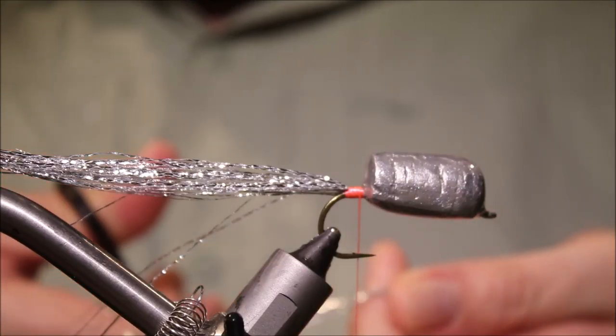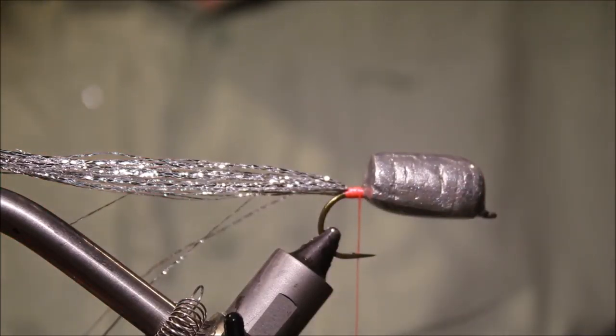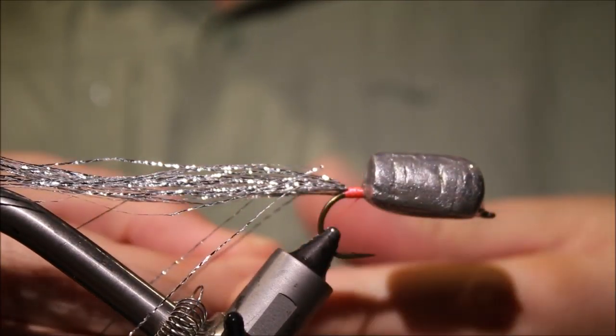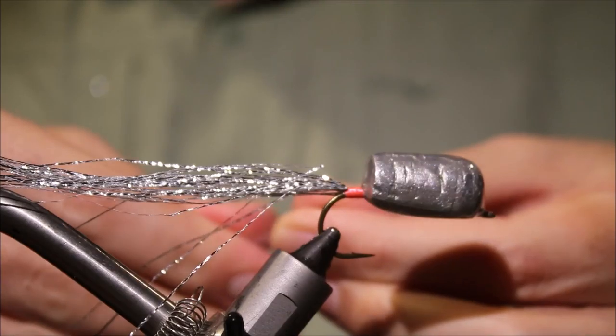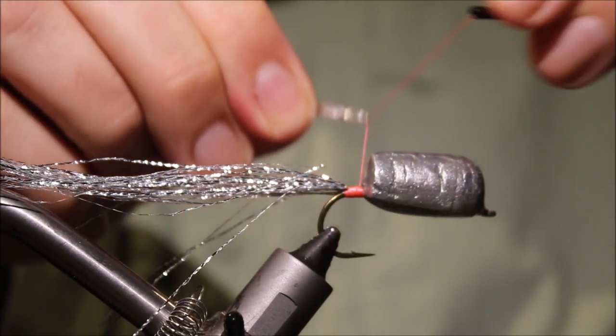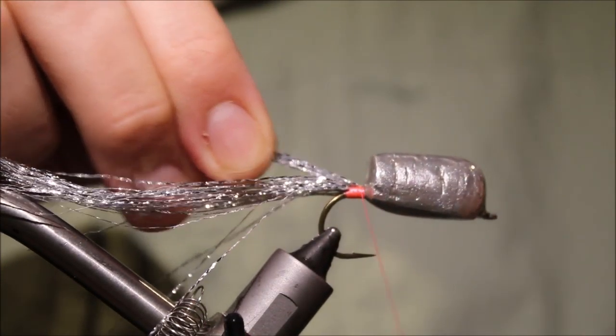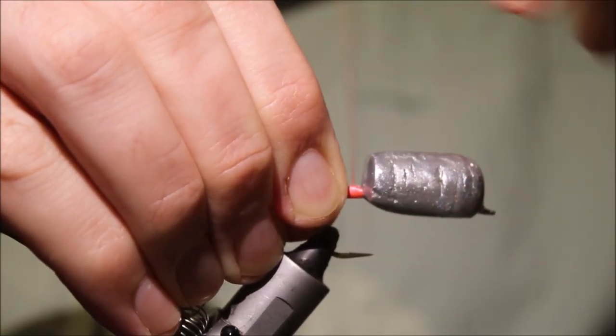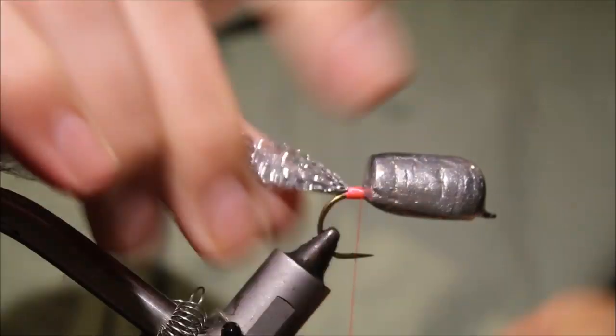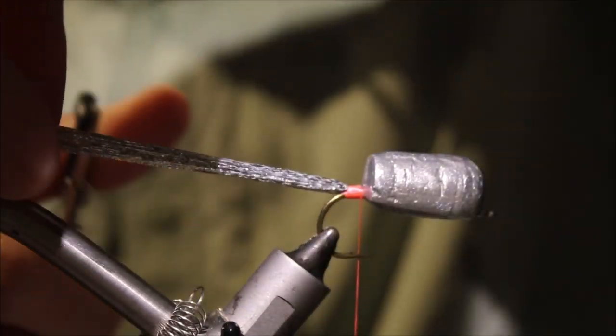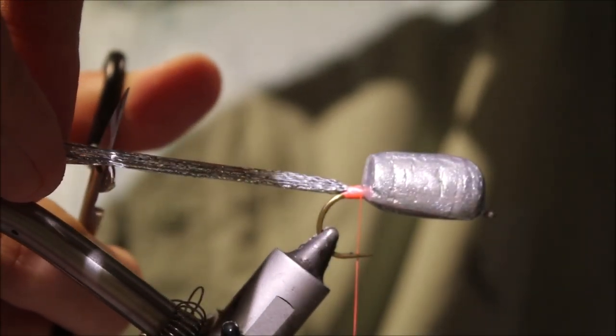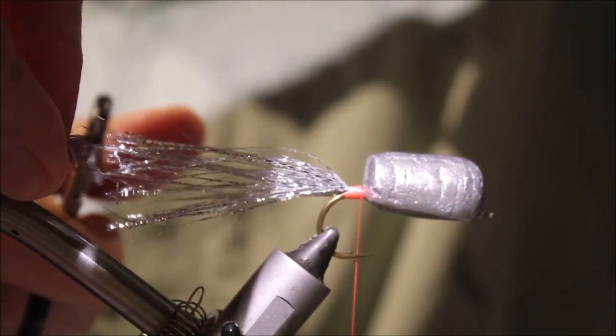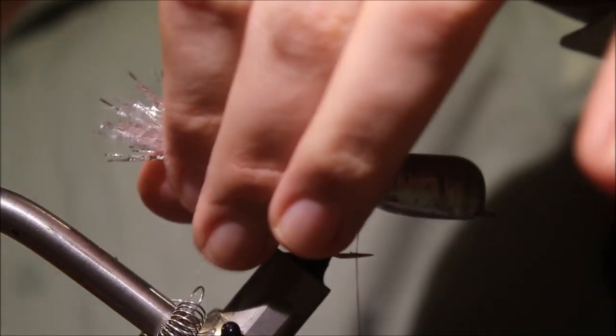I'm actually going to just thicken that up a wee bit, another two or three. I'll just do the same thing again. Fold it over my thread, get that locked in. And then, cut it the length you like. Slightly uneven, just so they don't clump together.